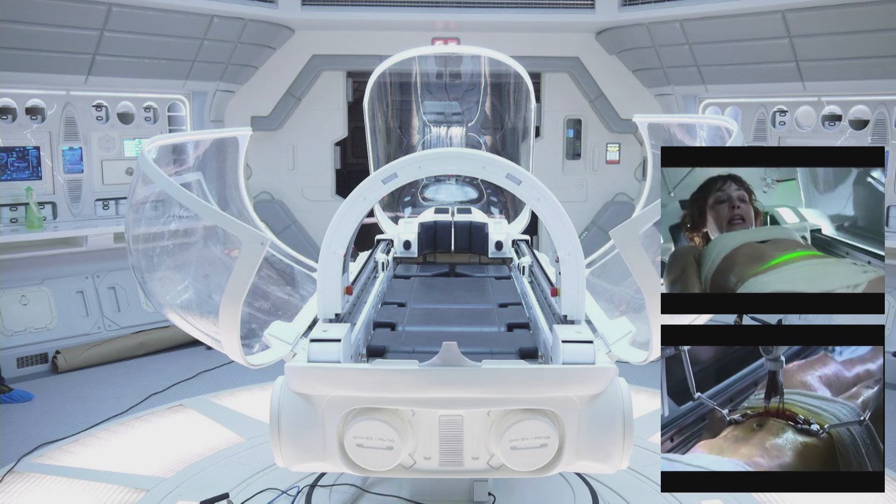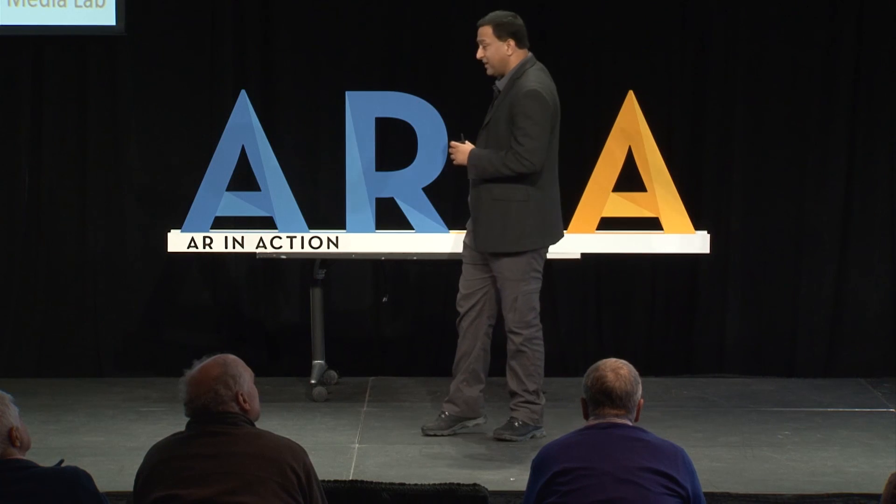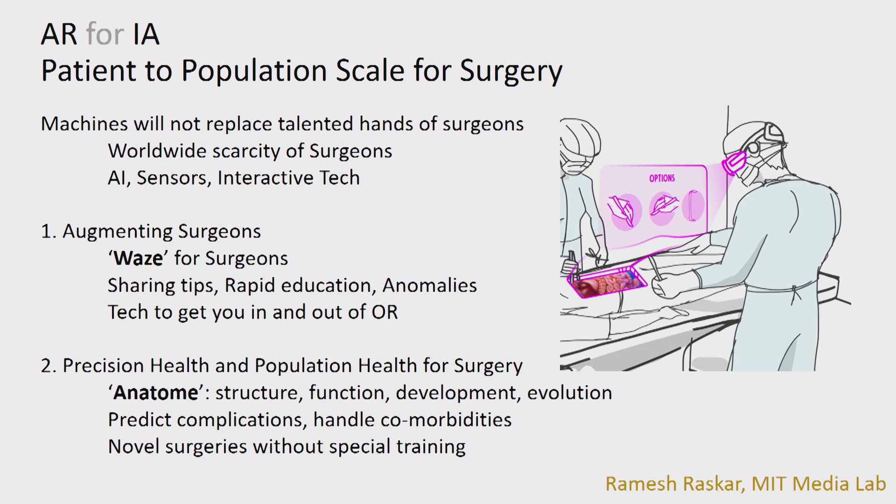Who has seen the movie Prometheus? Daniel Kraft told me to look at Prometheus as an example of the future of surgery — roboticized, extremely mechanized with lots of sensors. But it is debatable if this is how we are going to go, because I don't see how we are going to replace surgeons for the foreseeable future because of their dexterity, their knowledge, and their ability to make very critical decisions on the spot. As John said, I think AR really stands for IA — intelligence amplification. Intelligence amplification can really beat AI with AR. We have the ability with AR to go from a patient-scale surgical mindset to a population-scale surgical mindset. And if we have Waze for surgeons and anatome, we can create novel surgeries without special training. Thank you.